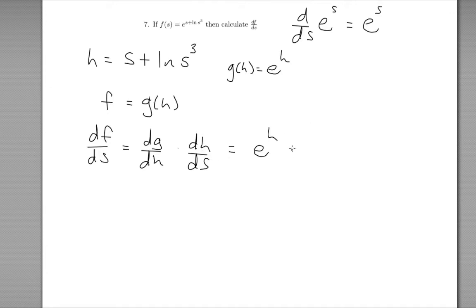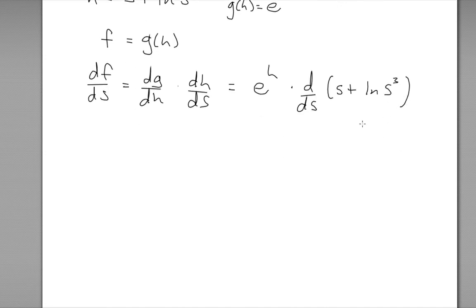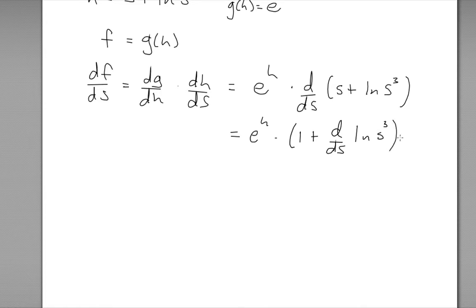Then we need the derivative of h with respect to s, where h is s plus ln of s cubed. The derivative of s with respect to s is just 1. Now we need to calculate the derivative with respect to s of ln of s cubed. You might be inclined to say, I have a formula for the derivative of ln — it's just 1 over — but that only works if you have ln of s. We have ln of s cubed, so we don't have a direct formula and we'll have to do something more clever.